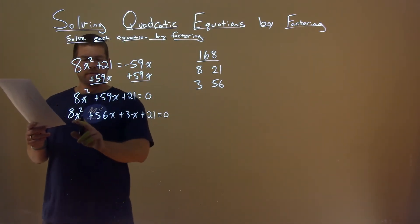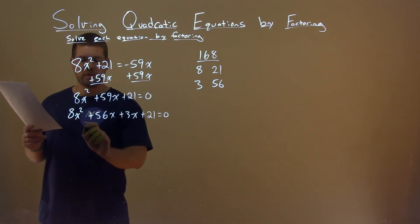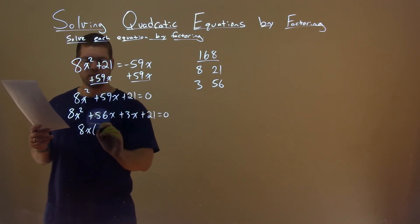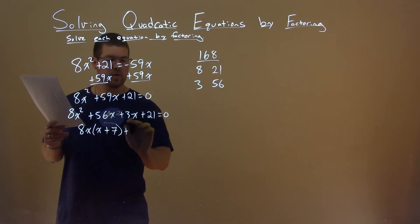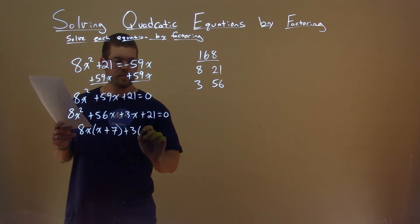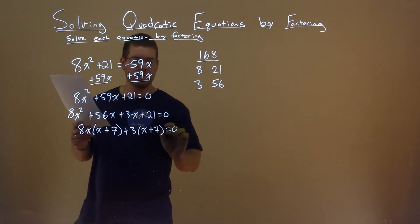Now let's go pull out a common factor. 8x is in both of these parts here. So we pull out an 8x, and we're left with x here plus 7. Pull out a 3 here in both parts. 3 comes out, we have x again plus 7 equals 0.